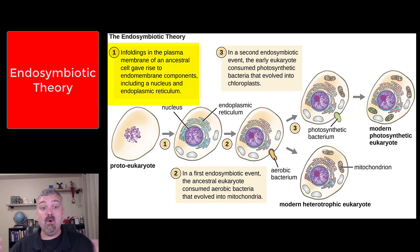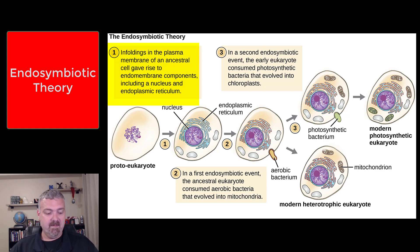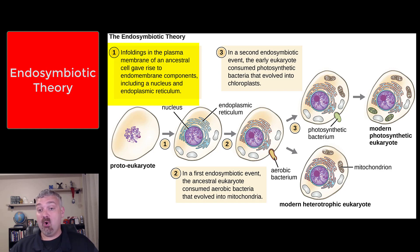Number one, you see that infoldings of the plasma membrane may have given rise to the endomembrane system, which is what we talk about with the nucleus. That's the real tricky spot — where the nucleus actually came from. But the rough and smooth endoplasmic reticulum and the Golgi would be examples of organelles that may have just come from this infolding of the plasma membranes. There are some prokaryotes that have double membranes inside their cells, so there's some evidence to believe that.